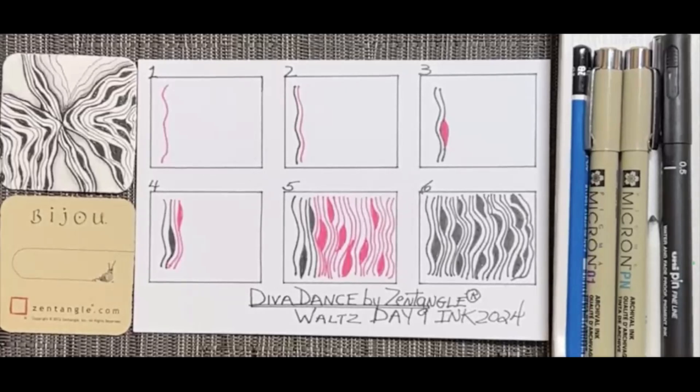So you're looking at the screen, you're looking at the Step Out Diva Dance by Zentangle. And there are several different versions of Diva Dance, and we're going to do the basic Diva Dance. You can see my example here, and it's an easy tangle.